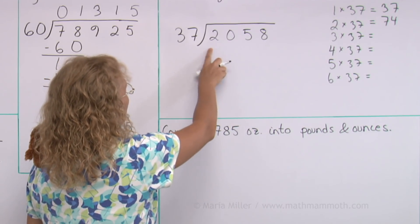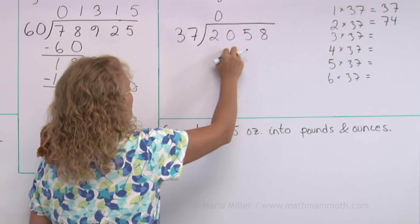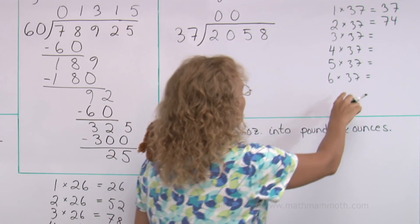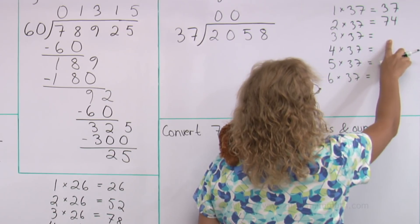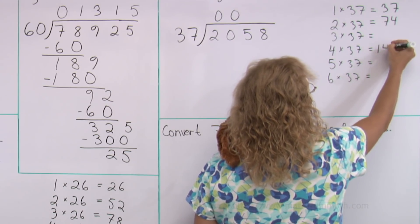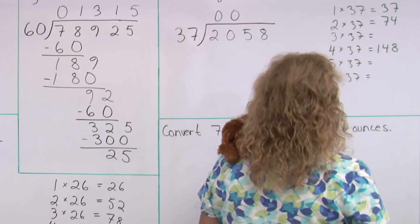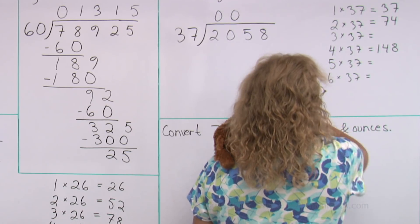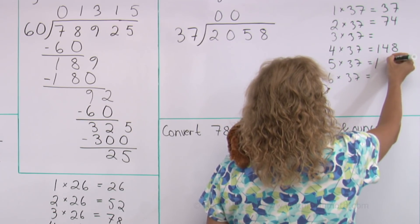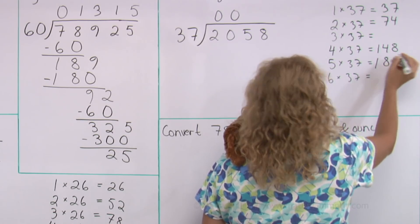37 goes into 2, 0 times, and into 20, 0 times, and then 205. Okay. I guess we better start filling this in. Let me double this 74. That would be here, right? That's not 205. No, not yet.